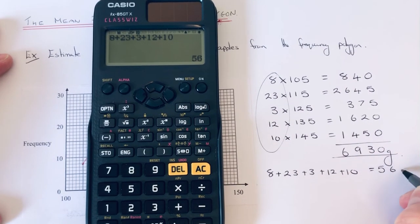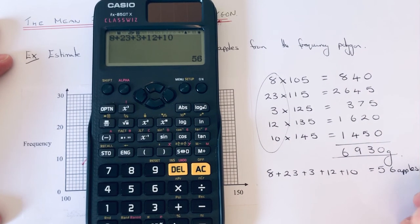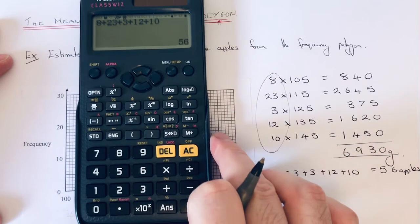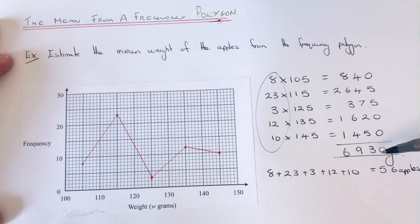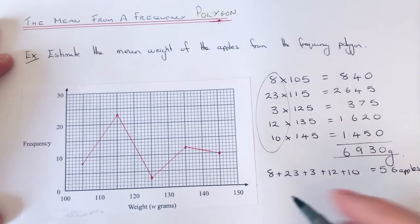8 add 23 add 3 add 12 add 10 gives a total of 56 apples. To get an estimate for the mean weight we just need to divide 6930 by 56.